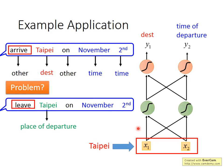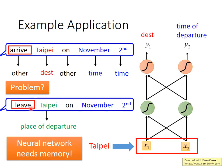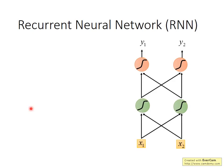Suppose the neural network has memory. It remembers that before seeing the red 'Taipei' it had already seen 'arrive,' and before seeing the green 'Taipei' it had already seen 'leave.' It can produce different outputs based on the context of a paragraph. If the neural network has memory, it can solve the problem of inputting the same word but expecting different outputs.